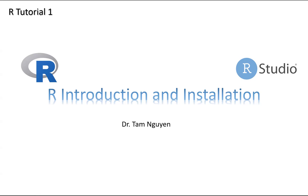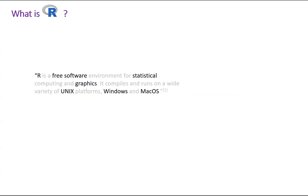So what is R? R is a free software for statistics and visualization. You can run R on different platforms, for example Unix, Windows, and Mac OS.